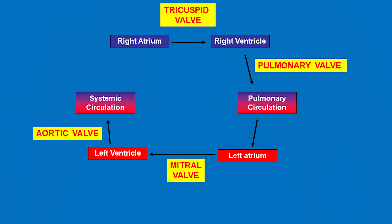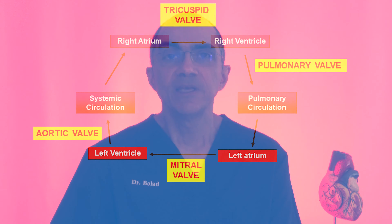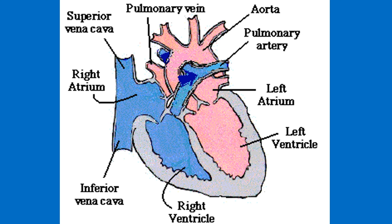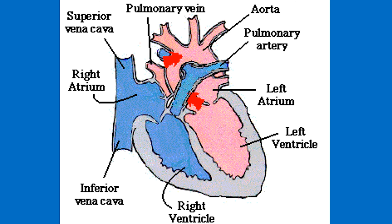When oxygen and nutrients are removed from the blood by the body organs, deoxygenated blood is returned again to the right atrium, then to the right ventricle, then to the lungs, and the cycle continues. Here is an animation of the movement of blood through the right side of the heart and the left side of the heart.